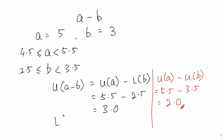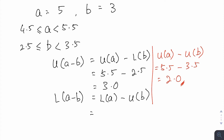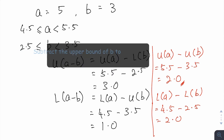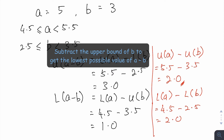Similarly, to get the lower bound of a minus b, I will have to take the lower bound of a minus the upper bound of b. So 4.5 minus 3.5 gives us 1.0. If I were to subtract the lower bound of b instead, I would get 4.5 minus 2.5 which is 2.0. Since 2.0 is larger than 1.0, in order to get the lowest possible value of a minus b I must subtract the upper bound of b.